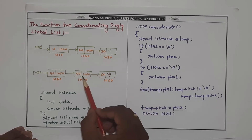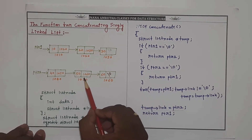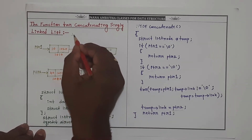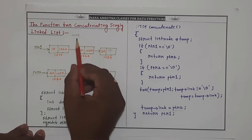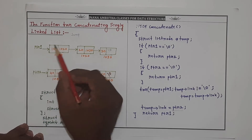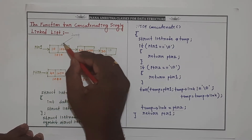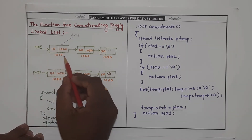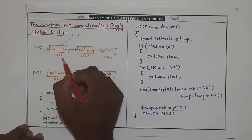In order to do that we require one temporary pointer. Initially, temp is equal to PTR1. Where PTR1 is pointing, that is address 1010, now temp is also pointing to 1010.